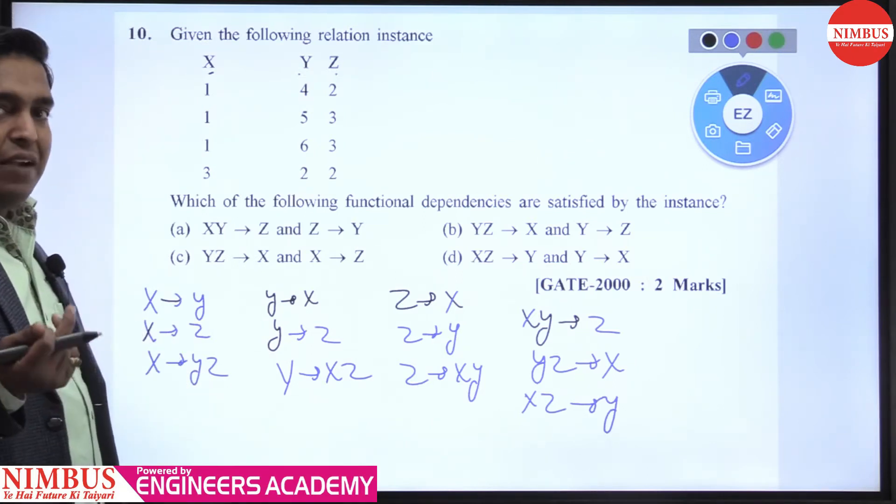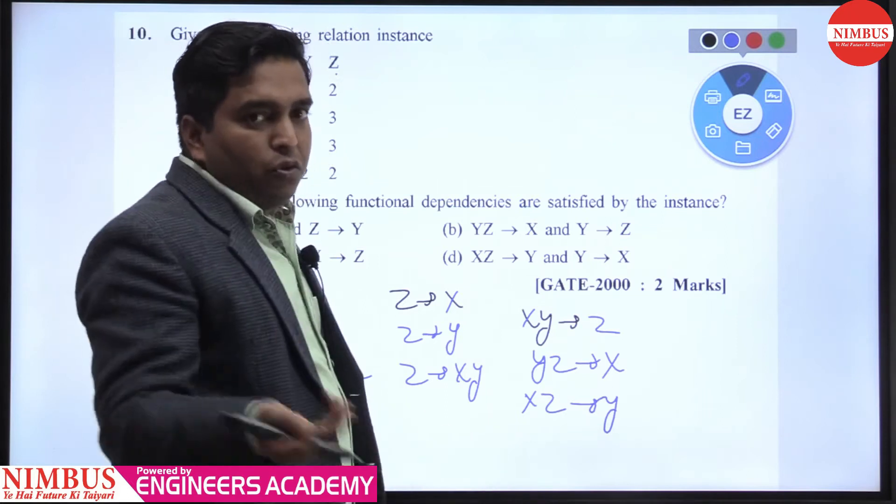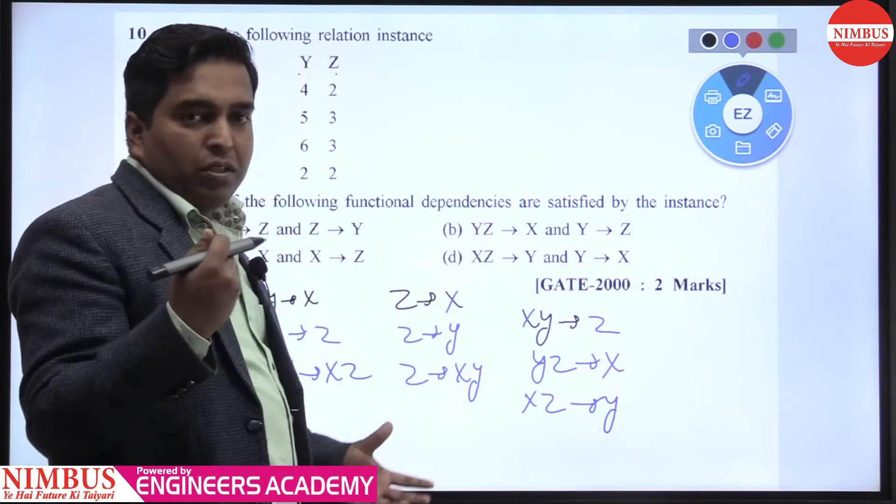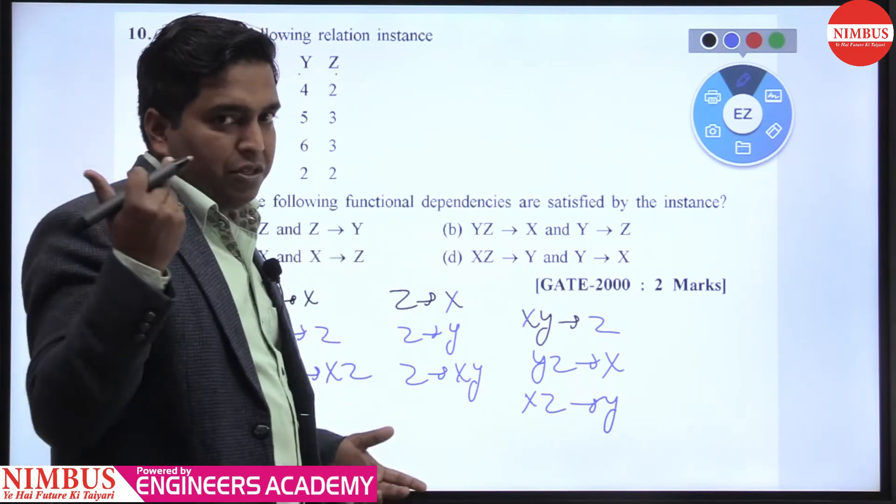Then we have to check the FD condition. Which one is satisfied, you can pick them. But in this question, you don't need to calculate all this. Options are given, you can directly filter the options. Getting my point?